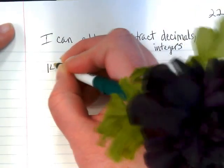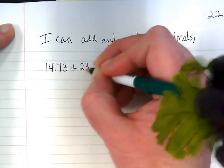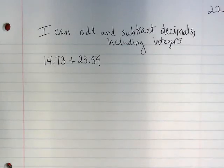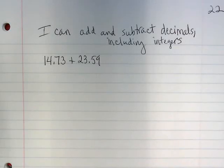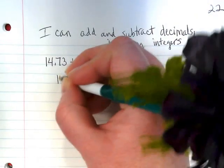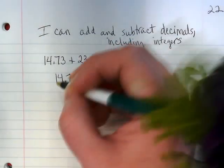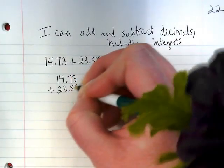We're going to do a few examples together. Often you'll see problems written like this in your book. Think about what you know about the main rule when adding or subtracting decimals — the main thing we want to do is line up the decimals. So we're going to rewrite this as fourteen and seventy-three hundredths plus twenty-three and fifty-nine hundredths.